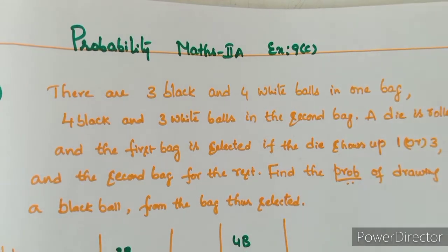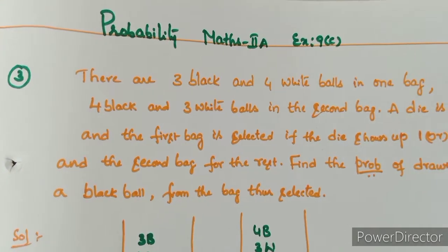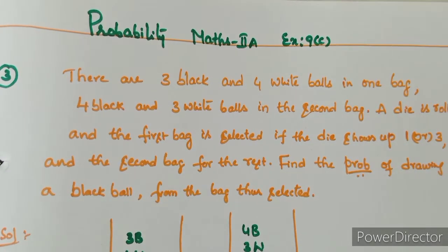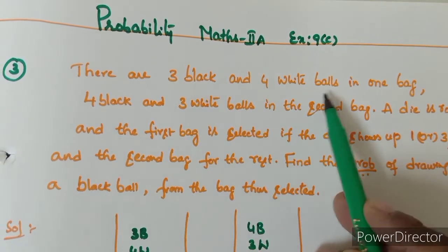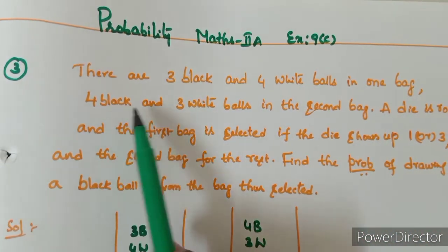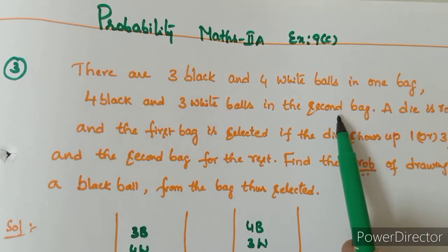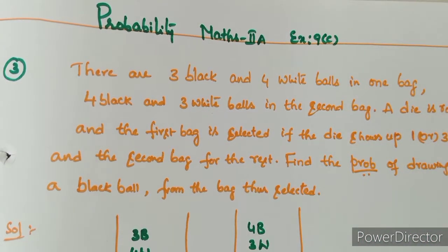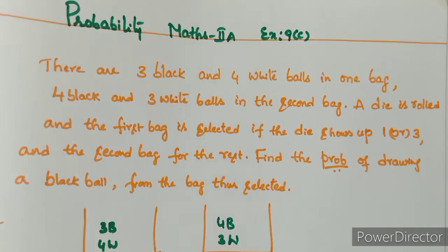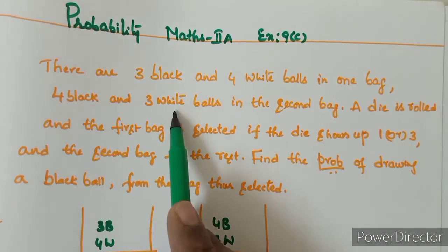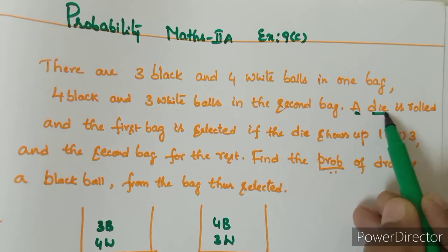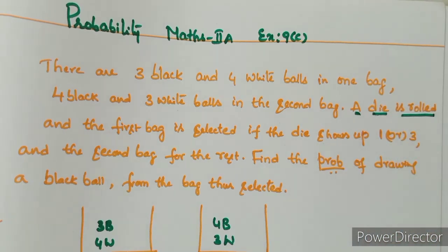Third question, Exercise 9C, number 1, third question. There are 3 black and 4 white balls in one bag, and 4 black and 3 white balls in the second bag. A die is rolled to select the bag.